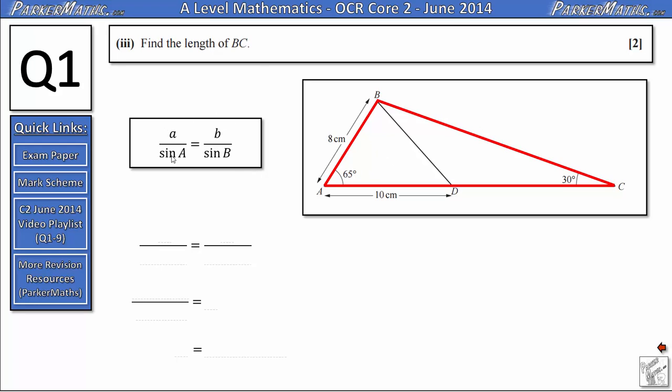Now the sine rule says A over sine A equals B over sine B. We'll label the 8 centimeters side A which means we'll call the other side that we're looking for side B. That makes the 30 degree angle angle A and the 65 degree angle angle B.